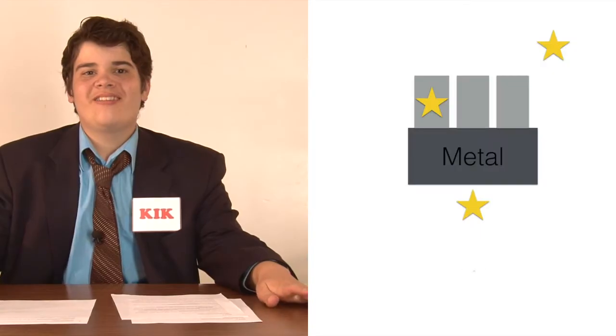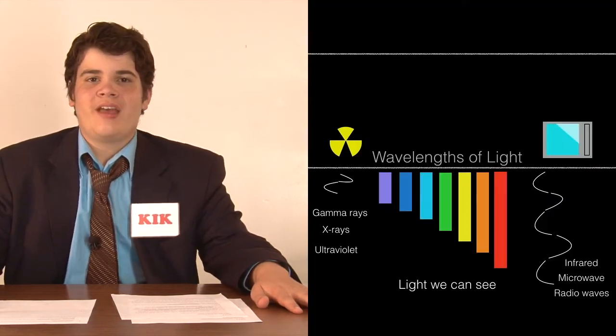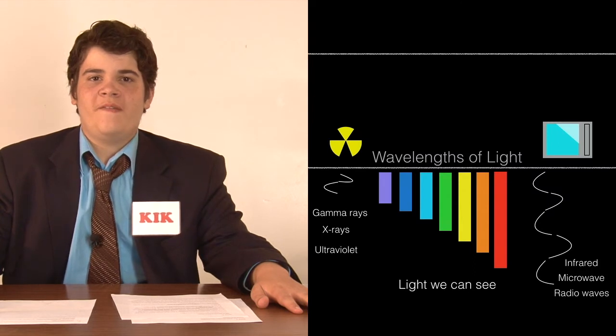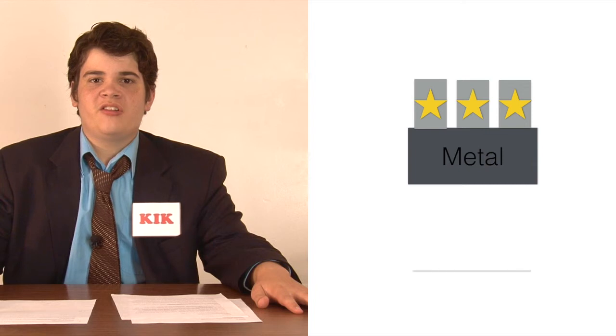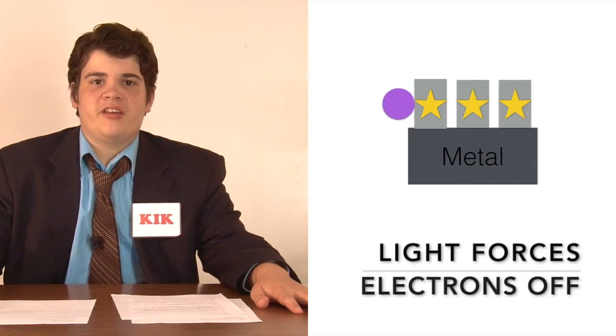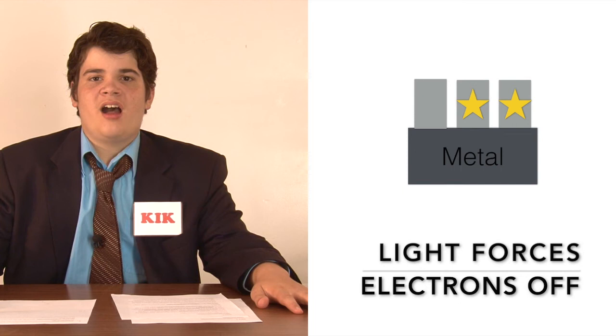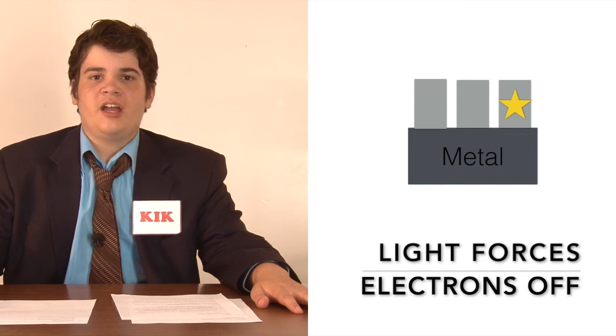Alright everyone, let's recap. Metal attracts electrons from the environment. We can force electrons off the metal when we use the right wavelengths of light. When the electrons are released, energy is released and can be captured and used. Thanks to Einstein's discovery of the photoelectric effect, others have been able to invent things such as electron microscopes and solar panels. We'll see you right here next time on the only show that keeps you in the know.